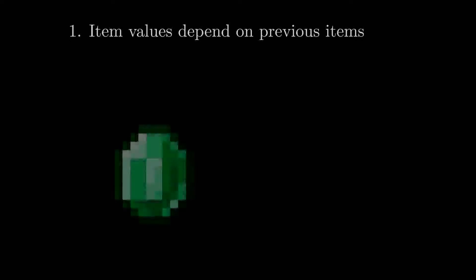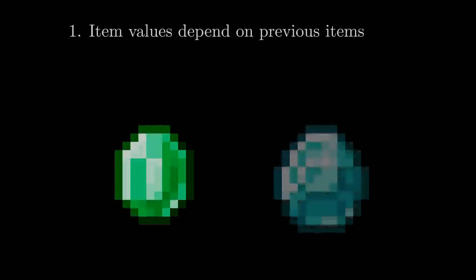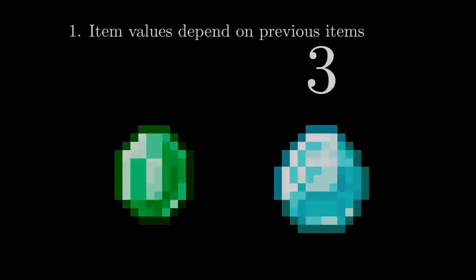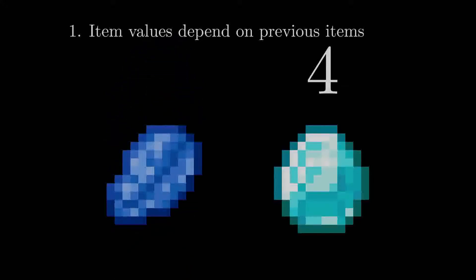The first is that a given item's value will change based on what items came before it in the sequence. So, for example, it could be where if we had an emerald followed by a diamond, the diamond would encode a 3, but if it were lapis followed by a diamond, the diamond would represent 4.